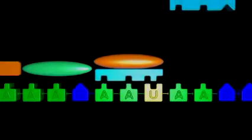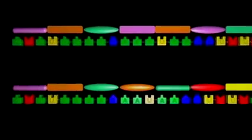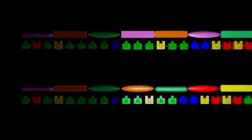Because the code is read three letters at a time, all the words downstream are now out of place, making a very different protein.